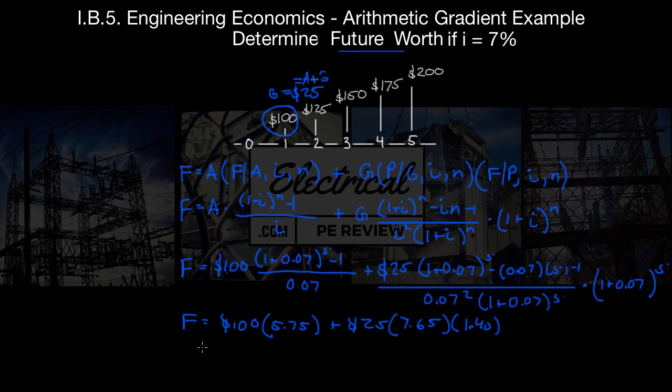Now we've got F equals $575 plus $268. We add these together and we come up with our final answer of F equals $842.